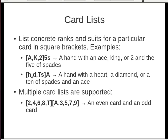Here we have a hand that has a heart or a diamond or the ten of spades and an ace. Just like multiple spans are supported, you can also have multiple card lists. This is a somewhat silly example, but it describes an even card and an odd card.